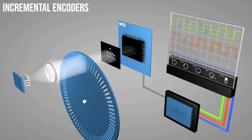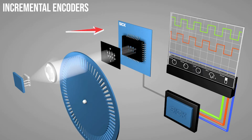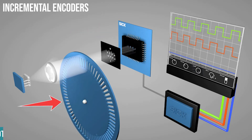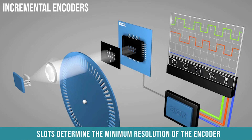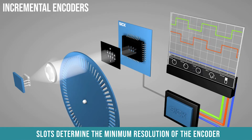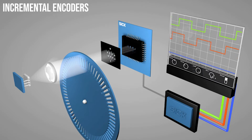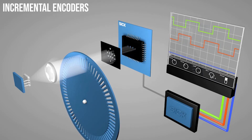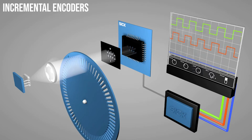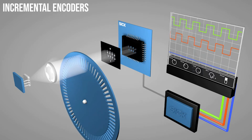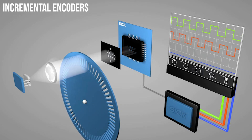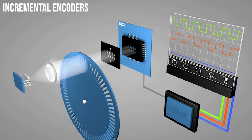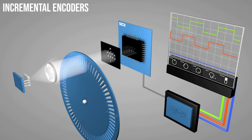Here's how they work. Inside the encoder is a light emitter and receiver, as well as a rotating disc with many little slots cut into it. These slots determine the minimum resolution of the encoder. As light passes through and is blocked by the slots in the disc, the encoder knows how far the disc is turned. Every time the light receiver receives a new pulse of light through the disc, it knows the encoder has moved a very small amount. The encoder gives pulsed output based on every increment of movement or resolution.